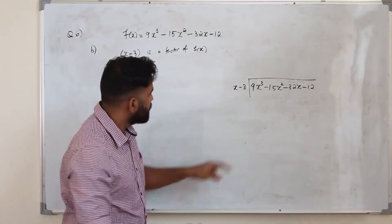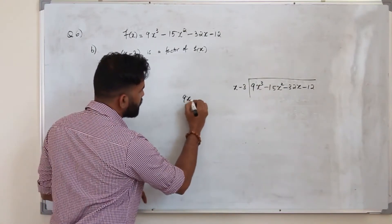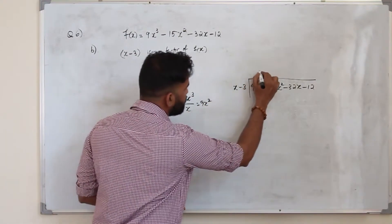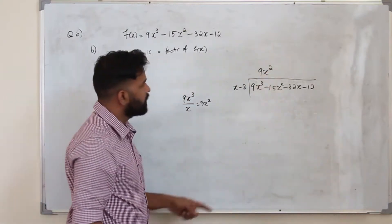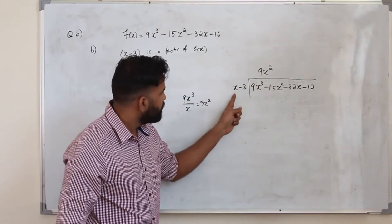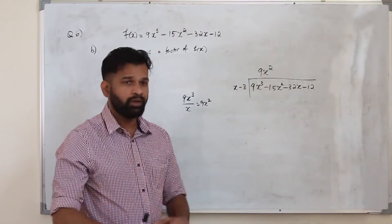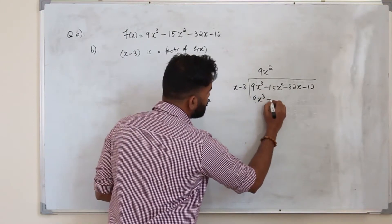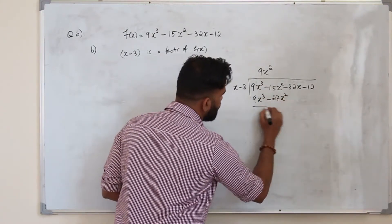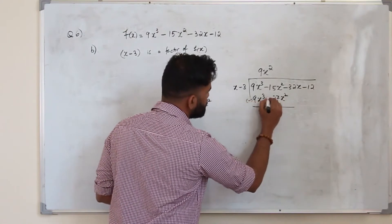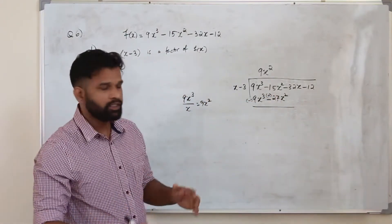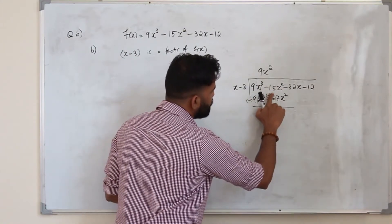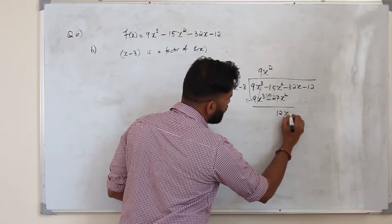Take the first term 9x cubed and divide by the first term x, giving 9x squared — that is the first term of the quotient. Multiply 9x squared by both terms of the divisor to get 9x cubed minus 27x squared. Invert the signs and subtract: minus 15 plus 27 gives plus 12x squared. Bring down the next term minus 32x.